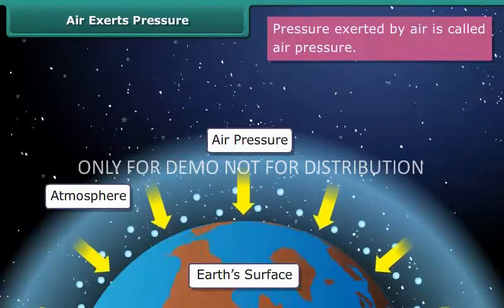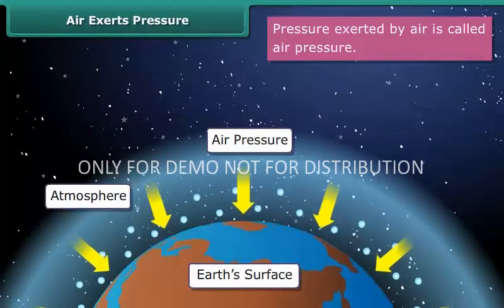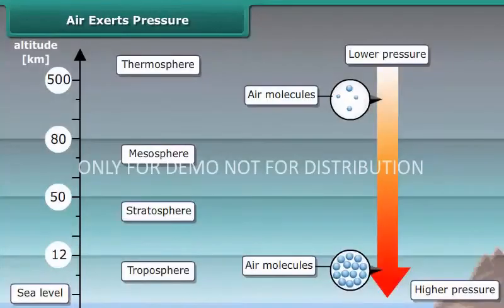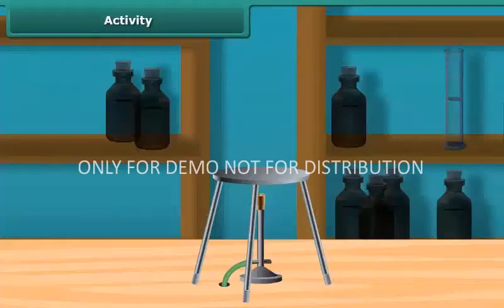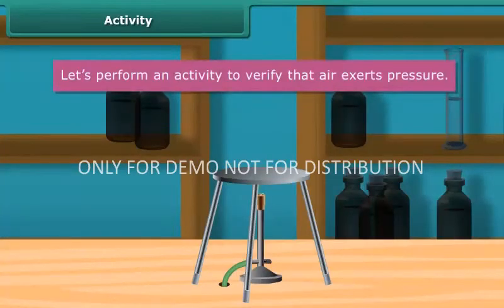We call this pressure as air pressure. The earth's atmosphere is 80 kilometers deep. As we move upwards, the air pressure decreases. Air also pushes pressure on our body. Let's perform an activity to verify that air exerts pressure.